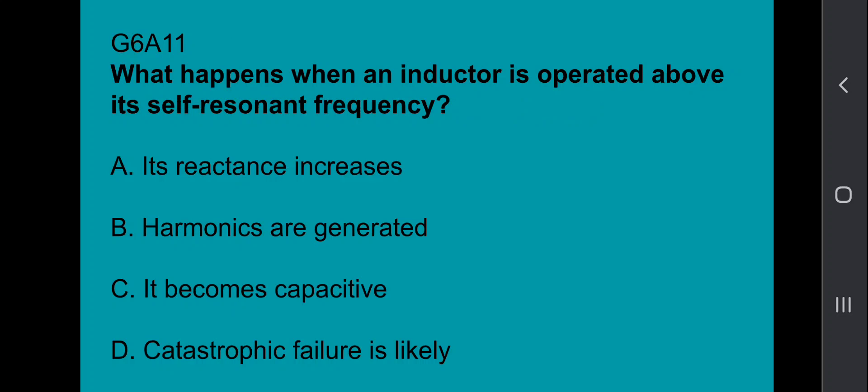G6A11: What happens when an inductor is operated above its self-resonant frequency? It becomes capacitive.